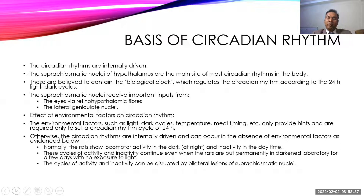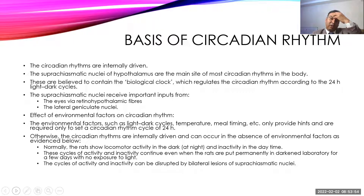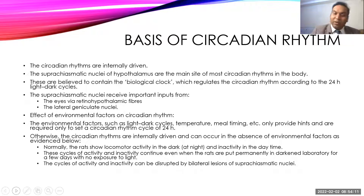A similar experiment can be done on humans — keeping them in a controlled room with no clock or time cues, and giving meals at regular four-hour intervals with the same meal each time, so the meal also gives no hint of timing. Slowly, their circadian rhythm starts to disturb. This shows that not only light or dark phases, but also environmental factors are important determinants of the circadian rhythm.